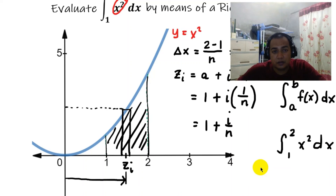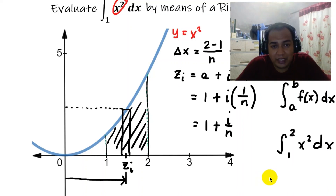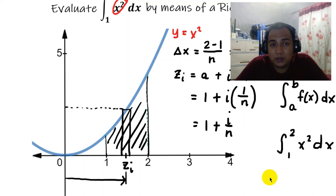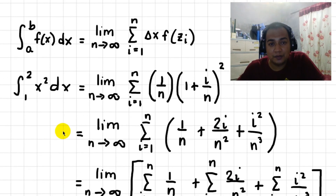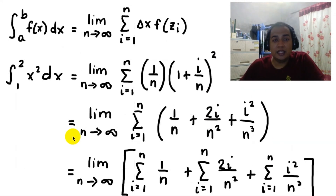That is how we use the limit of a summation to solve for the definite integral. This is a very tedious process — similar to the three-step rule used in derivatives, where you computed the limit of [f(x + delta x) minus f(x)] over delta x as delta x approaches zero. Just as with derivatives, later on we will learn easier methods and won't need to use Riemann sums directly.